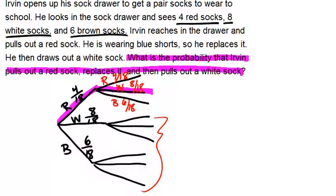Keep in mind that because he replaced the sock, the probabilities are still out of 18. If he had kept the sock that he picked, so he picked a red one and kept it, then all of these numbers would have to be out of 17 and there would only be three red socks left for this part right here.